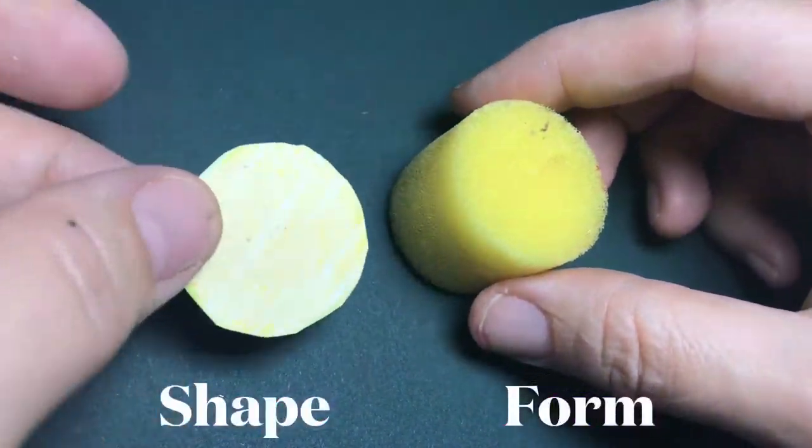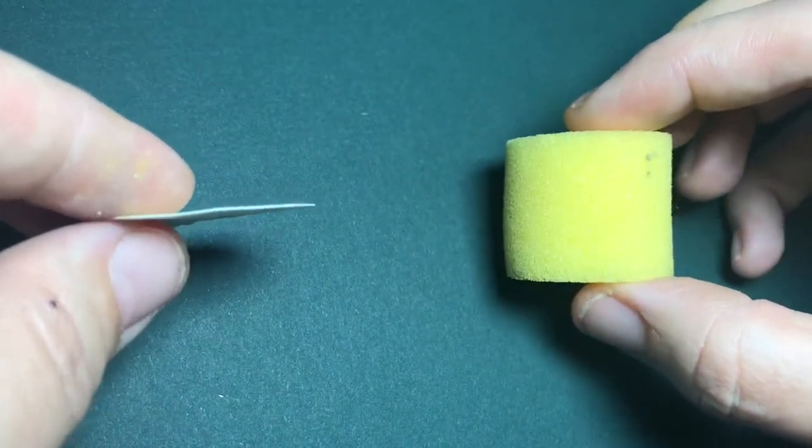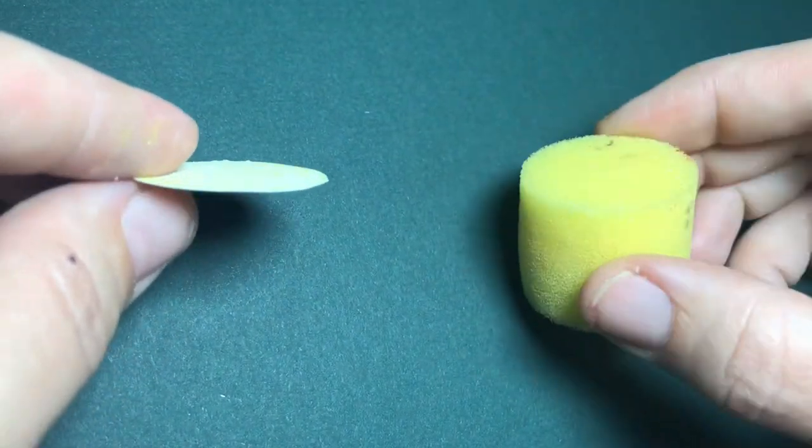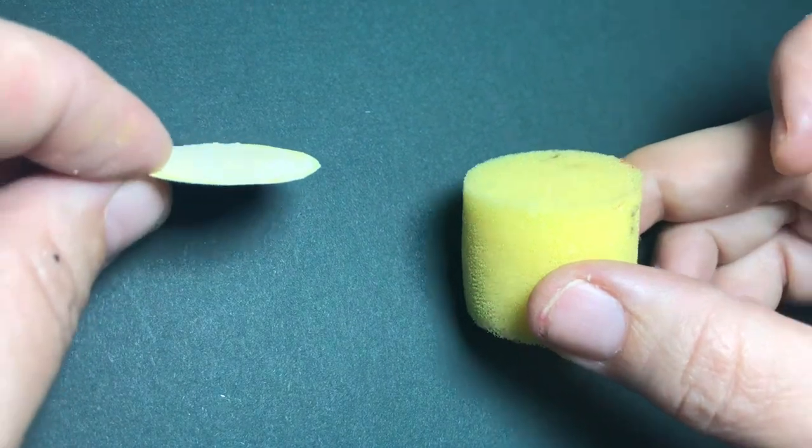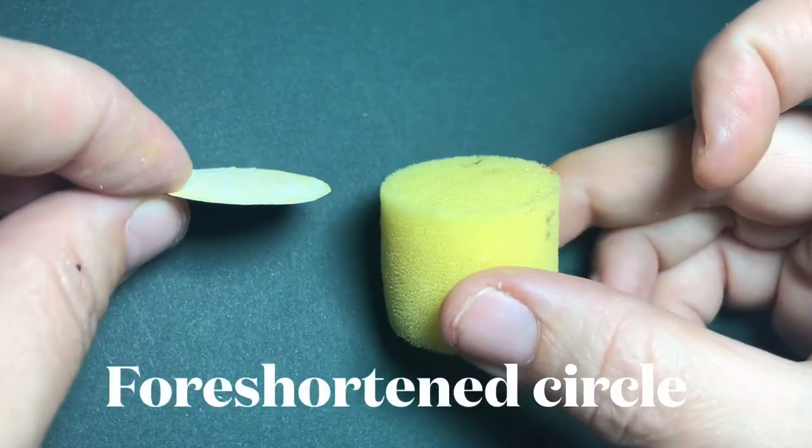To prepare for making a still life with a potion bottle, let's look at these two items. We have a shape, a circle which is flat, and we have a three-dimensional cylinder form. When we tilt them away from us we see a foreshortened circle.